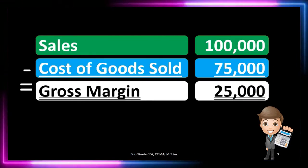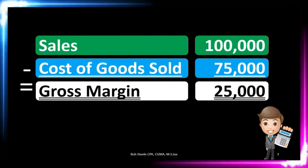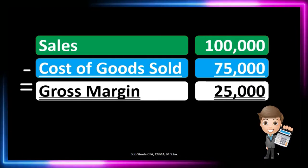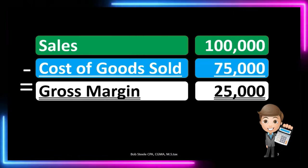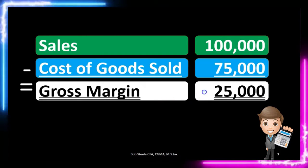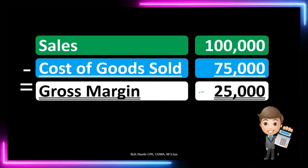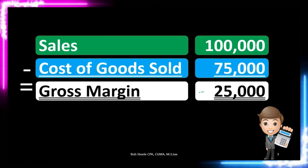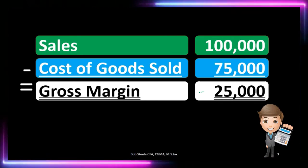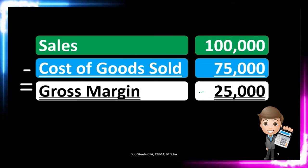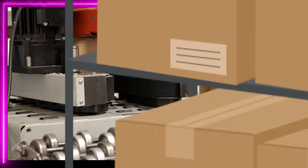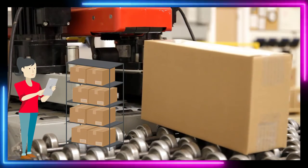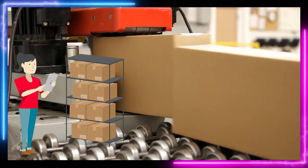That gives us the gross margin of $25,000, also called gross profit. We're not yet down to net income — the bottom line of the income statement — but gross margin is a very important number. That's why it's often broken out in a multi-step income statement for manufacturing or inventory-based companies, because the cost of goods sold relationship to sales is very important.